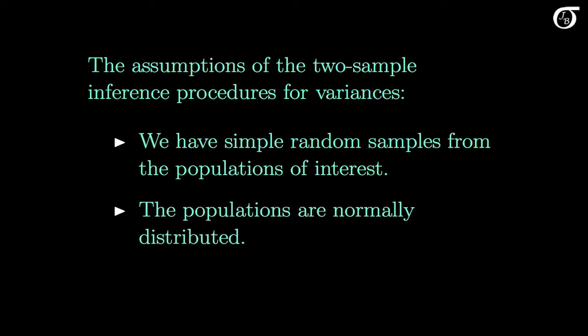The second assumption is that we need the populations to be normally distributed. This is very important in these inference procedures for variances, as the methods can work very poorly for some violations of the normality assumption. So let's investigate that by taking a look at the normal quantile quantile plots.